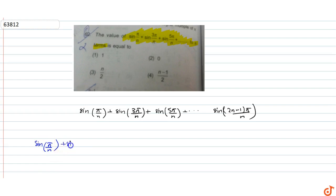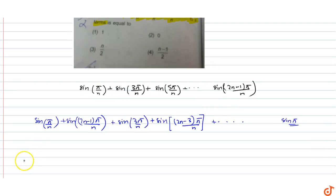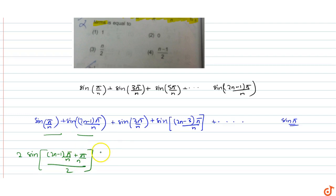We pair the terms: sin(5π/n) + sin((2n-1)π/n), sin(3π/n) + sin((2n-3)π/n), and so on, leaving one term sin(π) as is. Applying the sin(a) + sin(b) formula, we get 2·sin((2n-1)π/n + π/n)/2 · cos(...), and similarly 2·sin((3π/n + (2n-3)π/n)/2) · cos(...).